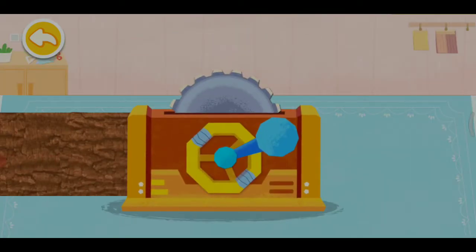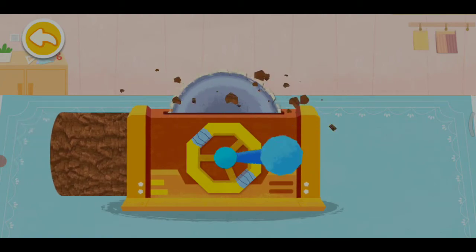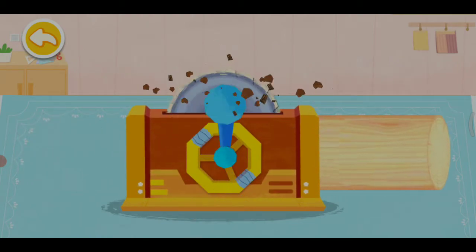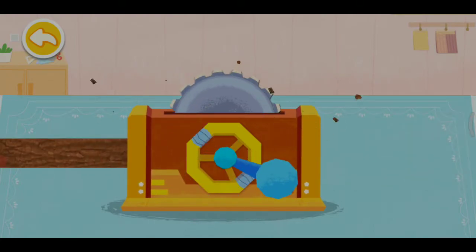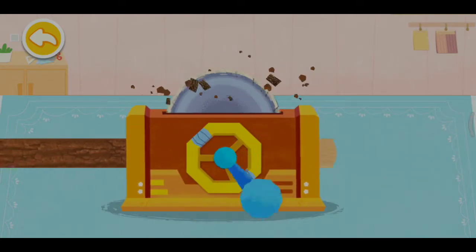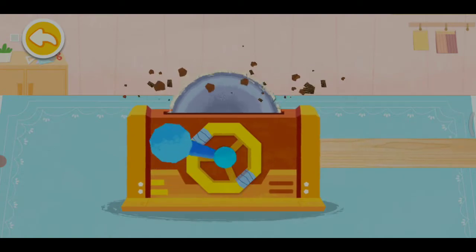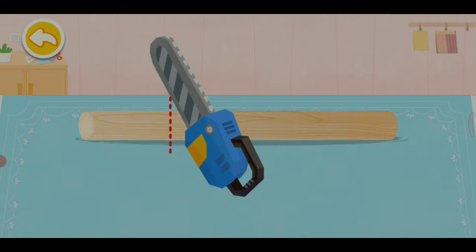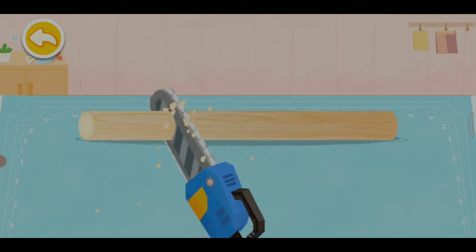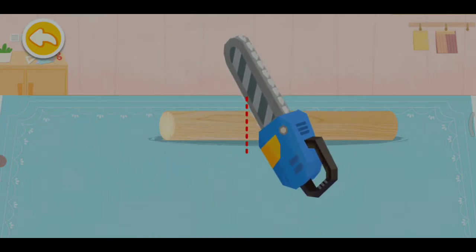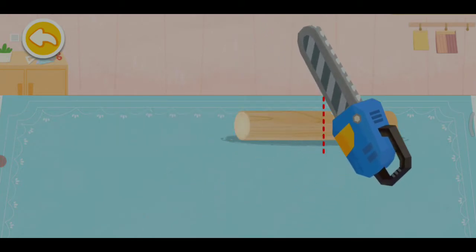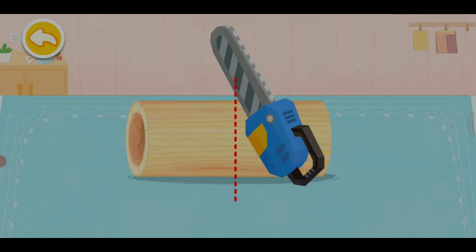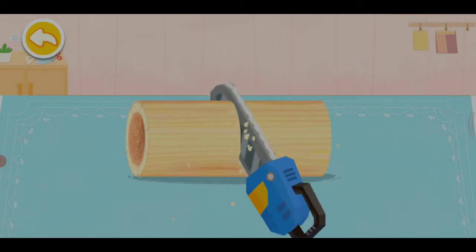Turn the nail to make a wooden sheep. Saw a piece of wood to make the sheep's legs. Saw another piece to make the sheep's body.